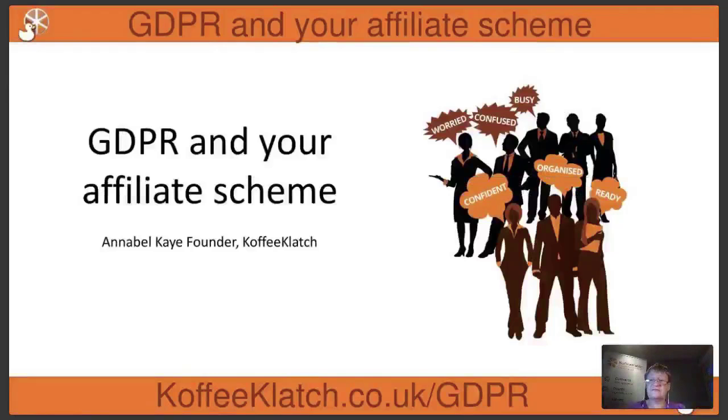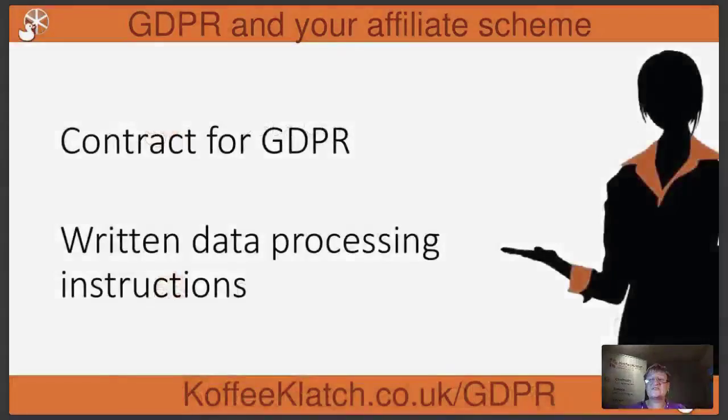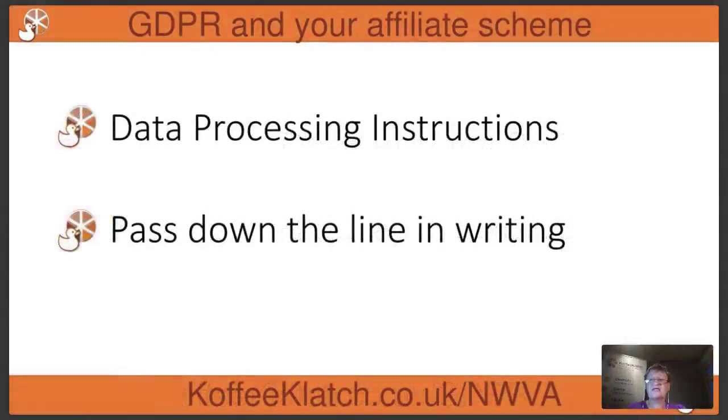If you haven't got a scheme already, I want you to imagine it. From the point of view of the affiliates, the purpose is so that they can actually make sure that everything is running smoothly and it's actually working. The problem is that obviously once you've got access to that data, you need to make sure that they're only using it for that purpose. The big secret to all of this is to set up your rules about what they can do, and then when you've got your data processing instructions saying you can access the data to check your commission, you pass it down the line in writing.